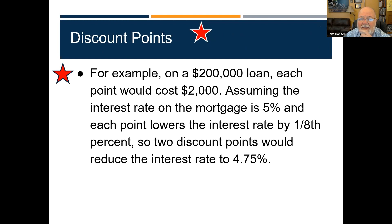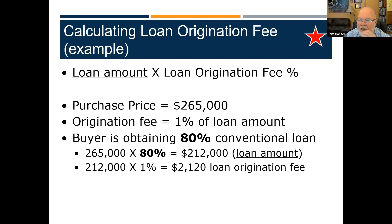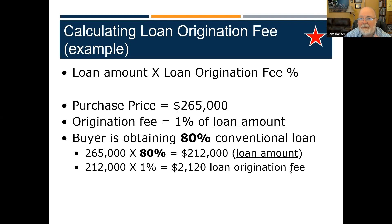If it is a loan origination fee, it's still called points, still a percent, but all this loan origination fee does is increase the profit to the bank — it's just a fee. In this particular case, the purchase price is $265,000, the origination fee is 1% of the loan amount. Getting an 80% conventional loan means your loan amount is $212,000. 1% of $212,000 is a $2,120 loan origination fee. You get nothing in return other than the loan. A discount point reduces your interest rate.